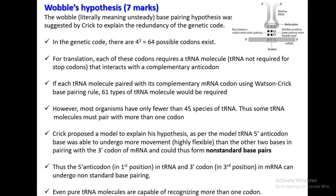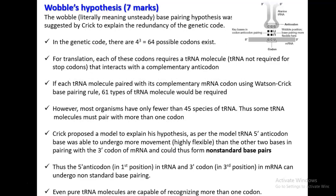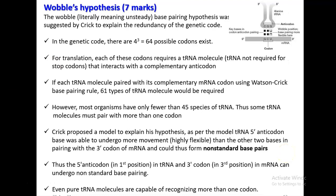In the genetic code, as per certain mathematical calculations, we have already seen the four bases — A, U, G, C — present in three possible combinational ways, resulting in the formation of 64 possible codons. For the process of translation, each of these codons present in the mRNA requires a tRNA molecule. tRNA is not required for the stop codon; a codon-anticodon interaction will be taking place. So, if each tRNA molecule paired with its complementary mRNA codon using Watson-Crick base pairing rules, at least 61 types of tRNA molecules would be required during the process of protein synthesis.